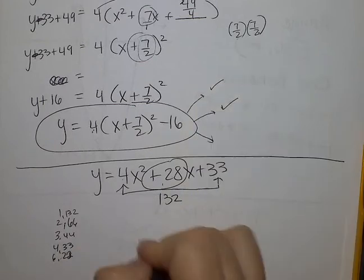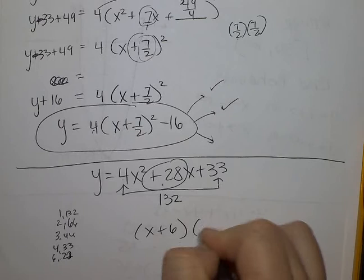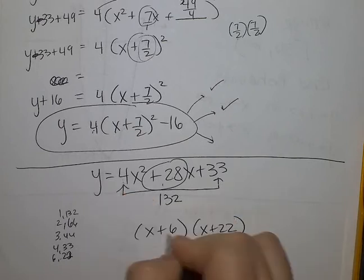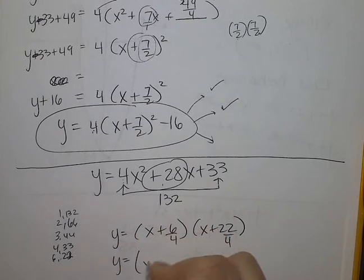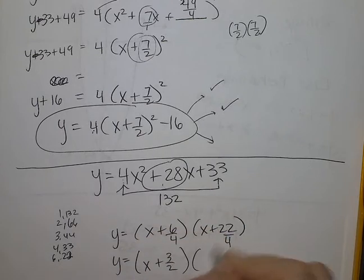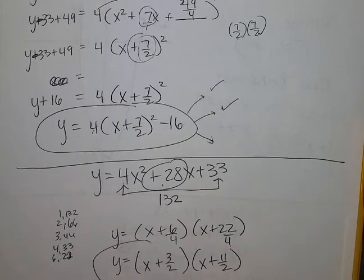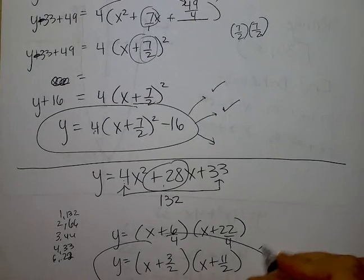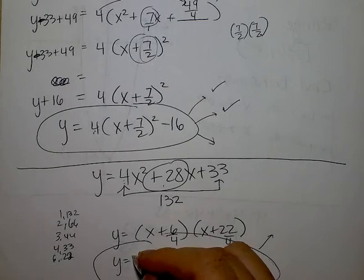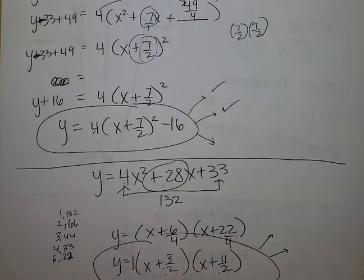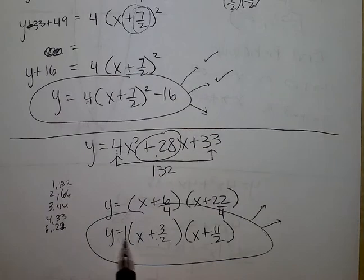So I'm going to do x plus 6 and x plus 22. Then take the leading coefficient and put it underneath. And that reduces down to 3 halves and 11 over 2. So what does this reveal in factored or intercept form? It reveals that you have x intercepts at negative 3 halves 0 and negative 11 halves 0. Because the number out front is a positive 1, it reveals that it opens upward. But it does not stretch or compress because the number is 1.